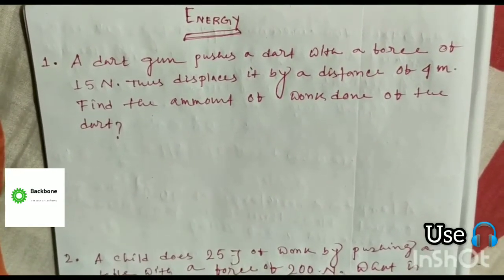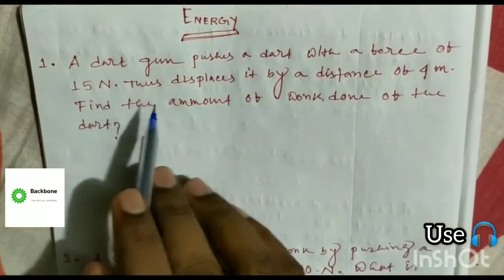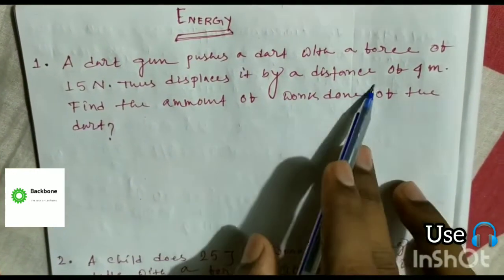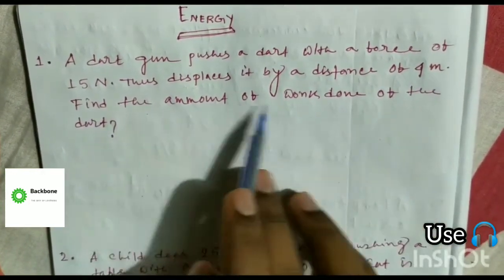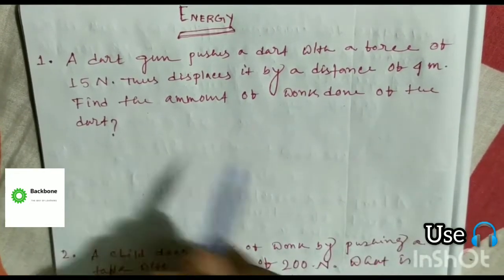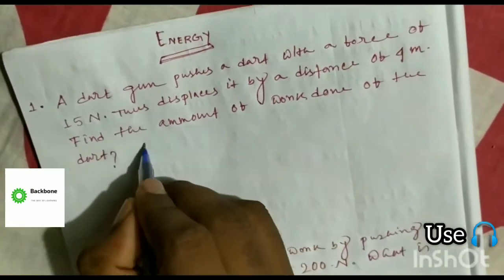A dart gun pushes a dart with a force of 15 N. This displaces it by a distance of 4 meters. Find the amount of work done on the dart.